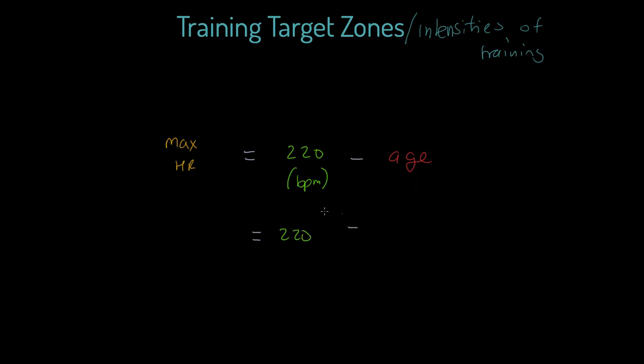Minus 16, which of course would give us a figure of 204. If it was me as I sit and write this, I'm 45, that's embarrassing to admit, but mine of course would be 220 minus 45, and of course that's going to lead me to a maximum heart rate of 175.